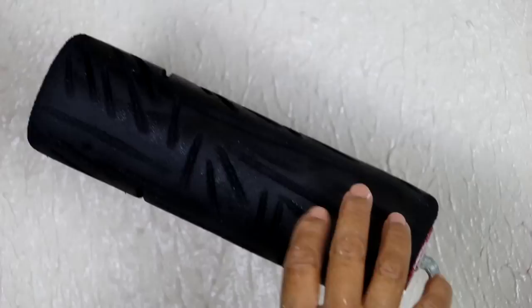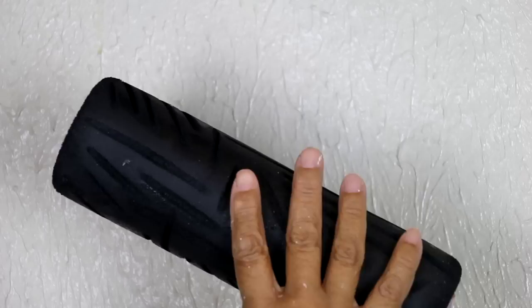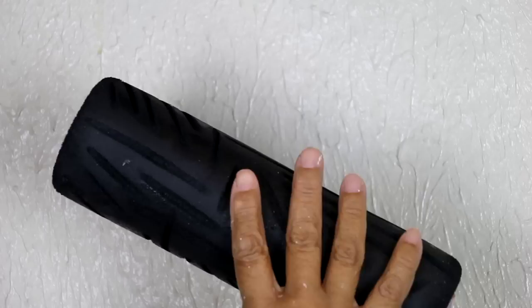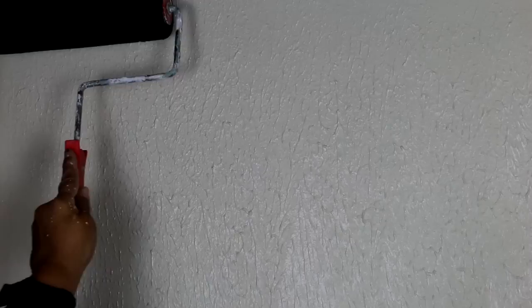So it's time to put the pattern in. We're going to use our texture roller here. But before you get started with it, just dampen it a little bit. You don't want it sopping wet, just damp. Now what I'm going to do is start from the left-hand corner and work my way across, slightly overlapping the pattern.